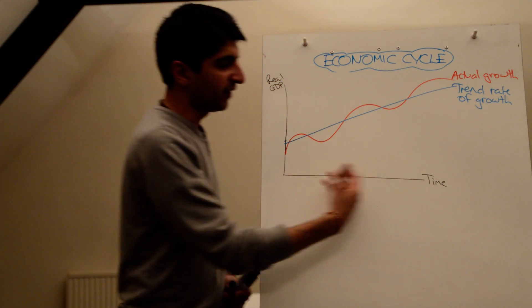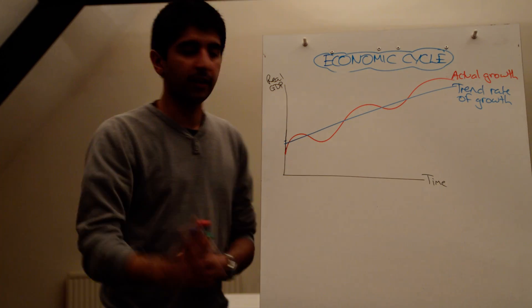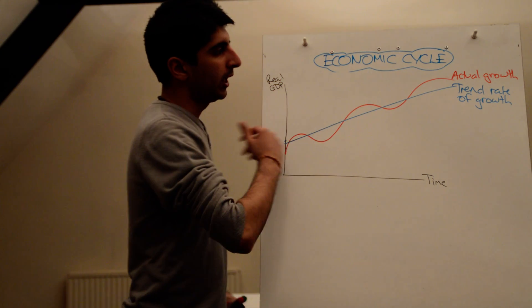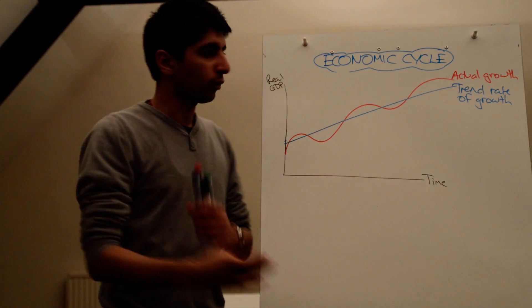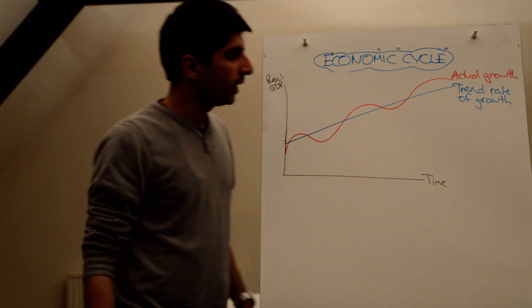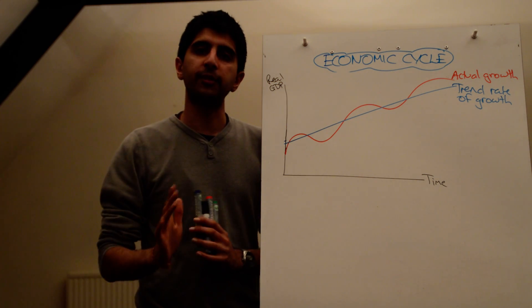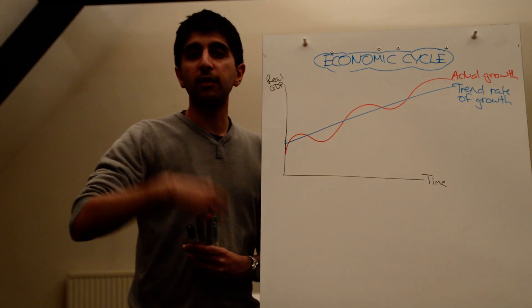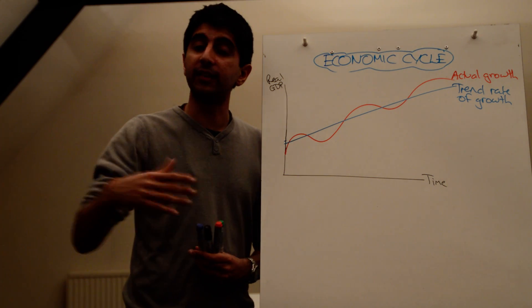So this might be 50 years, 60 years, 40 years, it doesn't matter. Over a given period of time, if we average out what's going on with actual growth, we then get the trend rate of growth, which in the UK is believed to be around 2 to 2.5%. It measures how much the productive capacity of the economy increases each year.